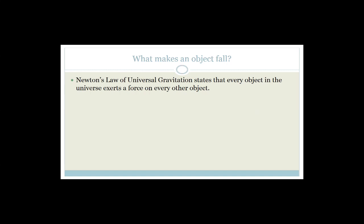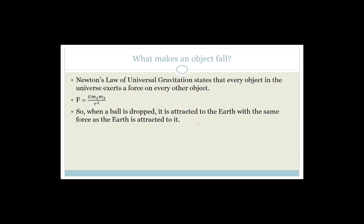First of all, what makes an object fall? Well, Newton's law of universal gravitation states that every object in the universe exerts a force on every other object. So F is equal to G·M1·M2 over R squared. Basically, what we're saying is that every object in the entire universe attracts every other object.